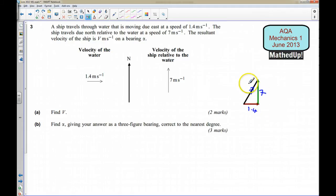So this is 1.4 and this is 7. So our first job is to find the hypotenuse of this right-angled triangle and that will tell us what the resultant velocity. Now using Pythagoras I can find V because I know that V squared is going to be equal to 1.4 squared plus 7 squared.